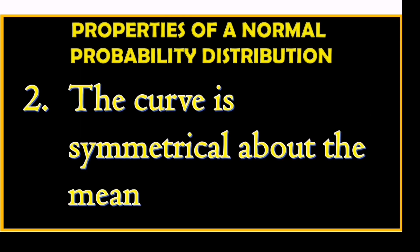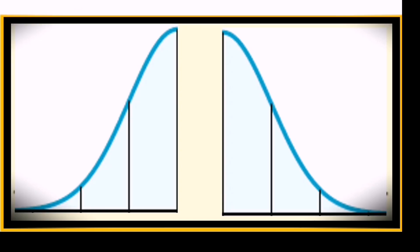Number 2: The curve is symmetrical about the mean. Number 3: This means if we cut the curve about the mean, we can say that one side is a reflection of the other.